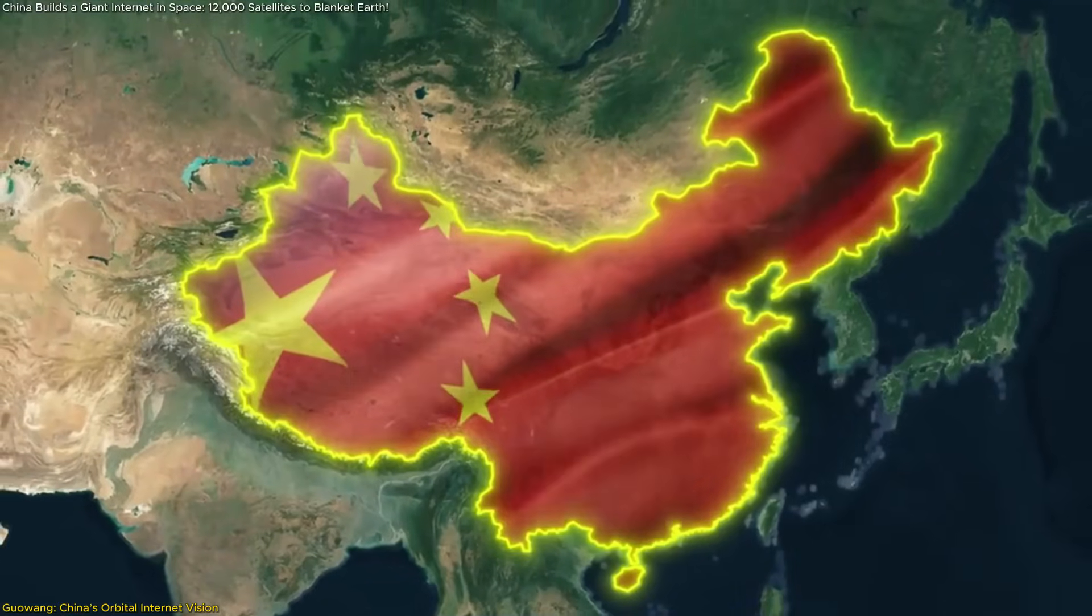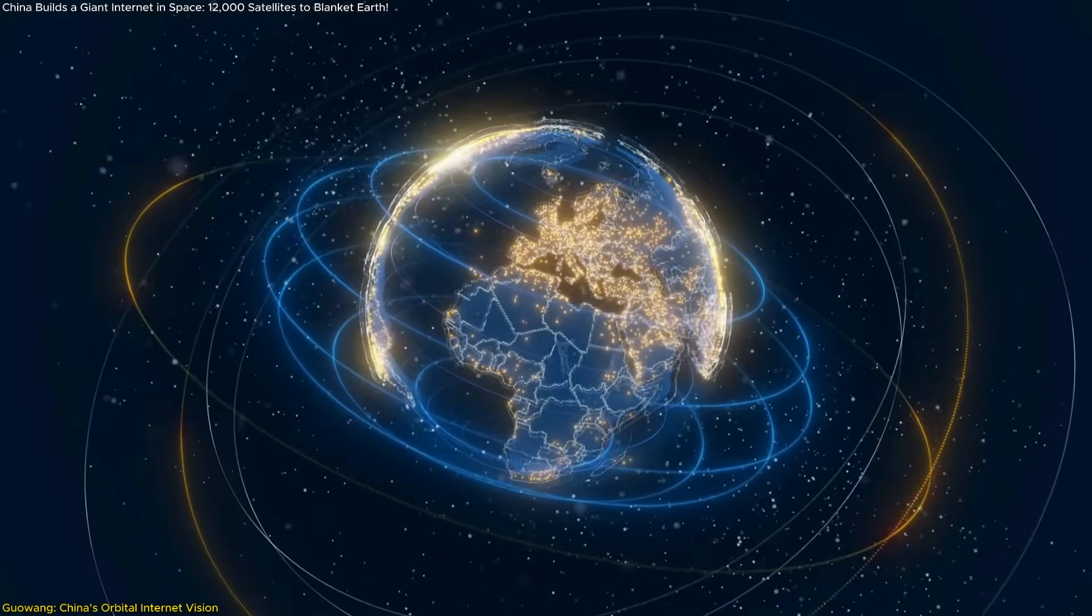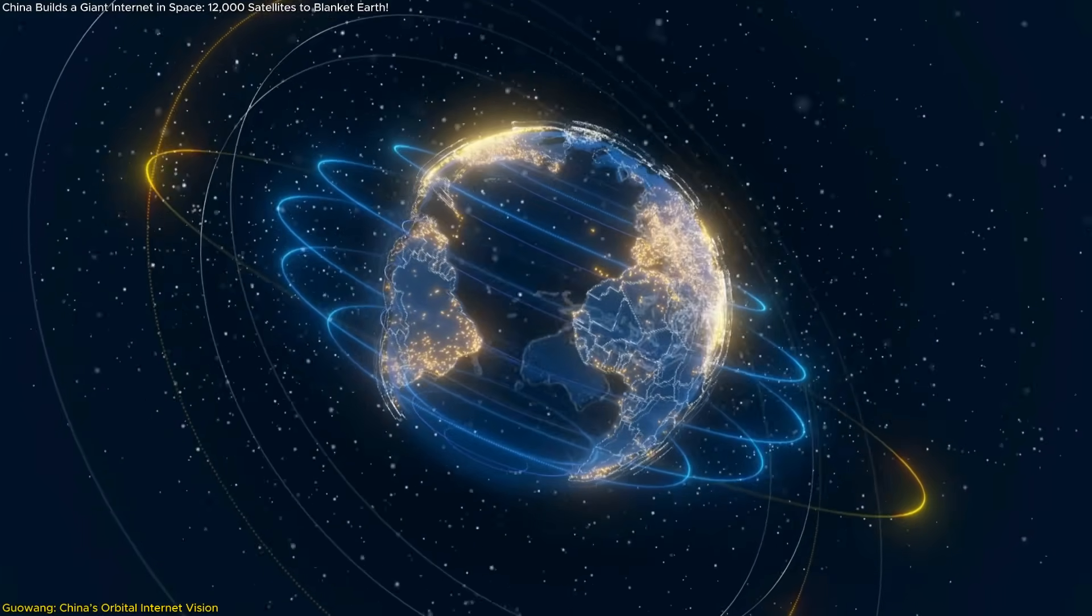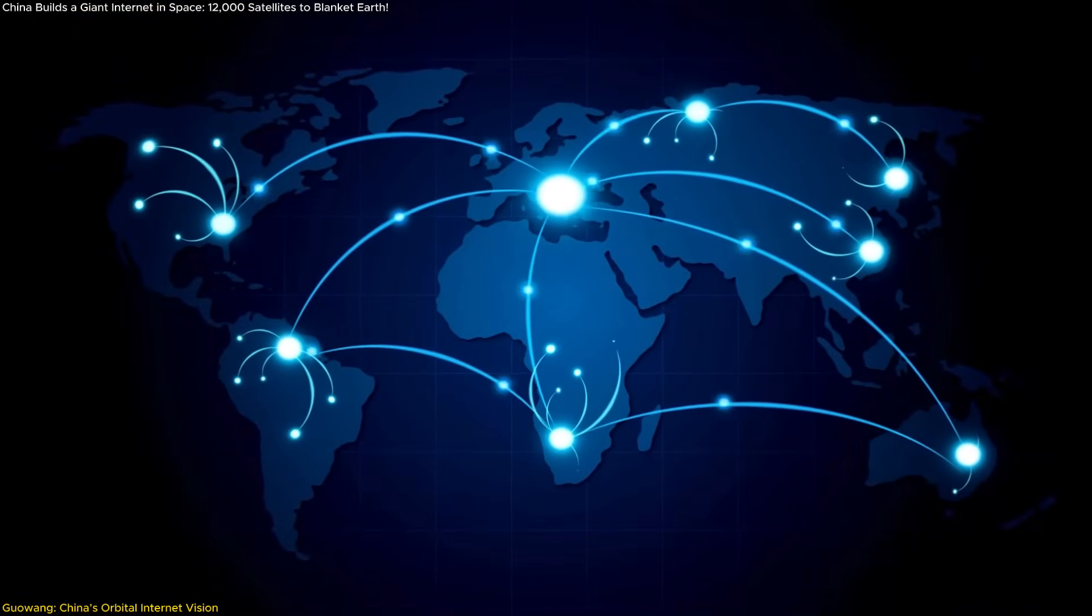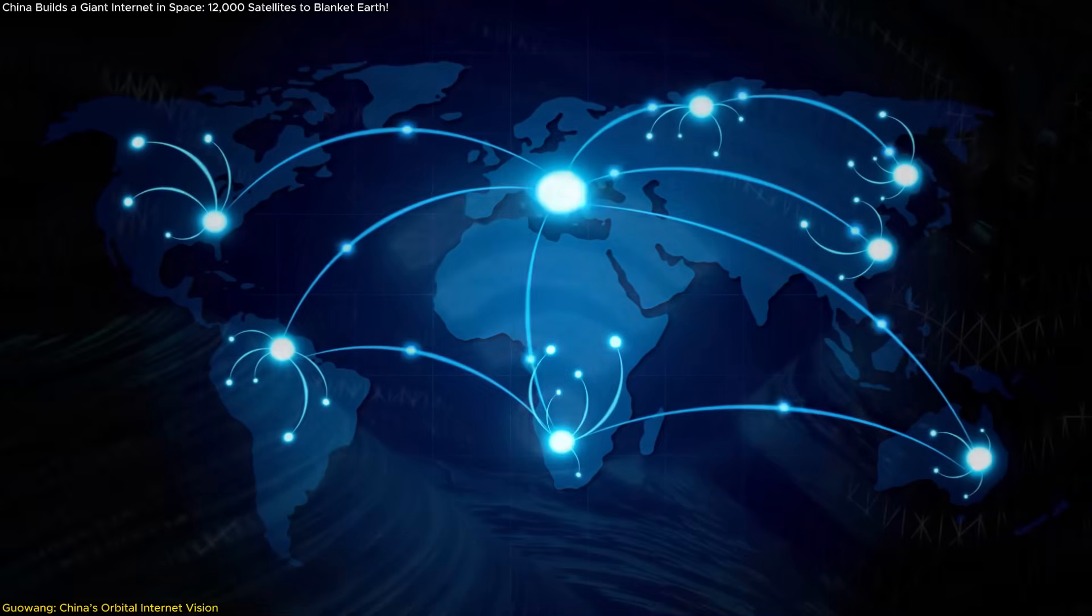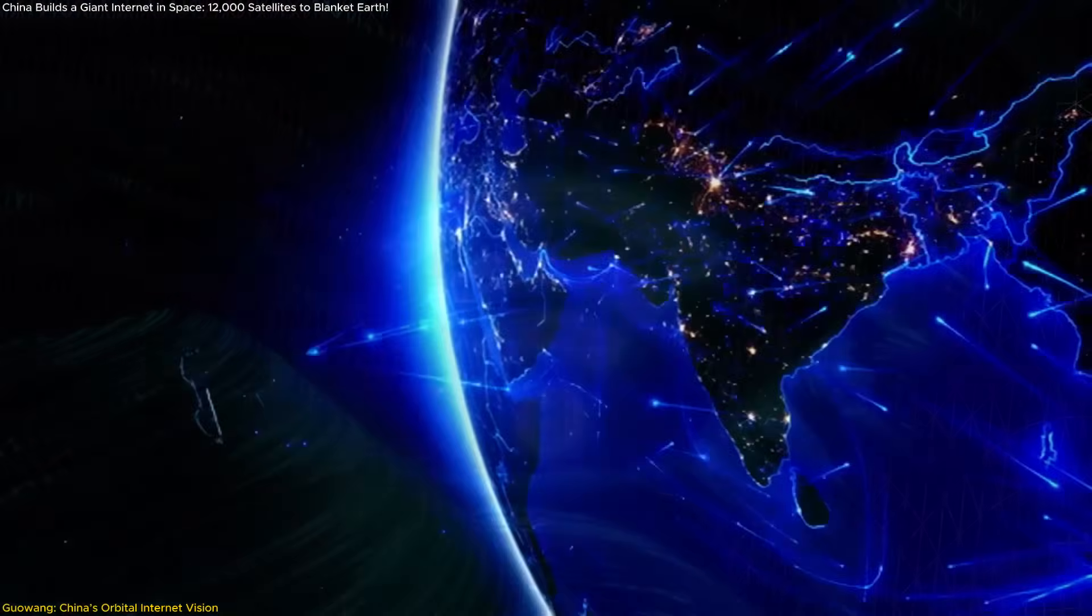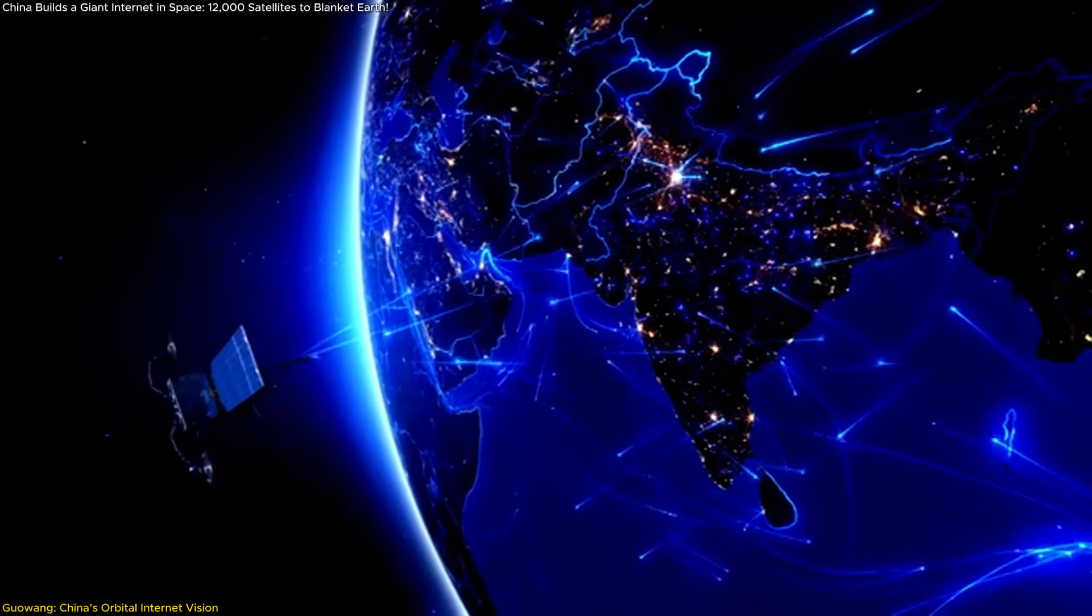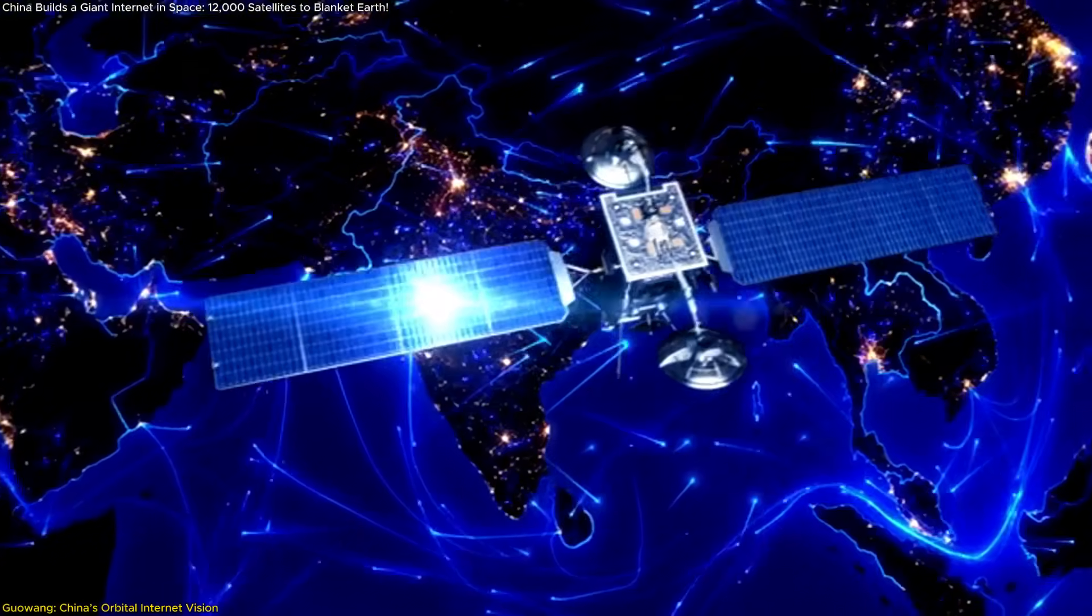But this isn't just about national pride or showcasing launch capabilities. Guang is meant to provide a sovereign, space-based internet infrastructure that connects regions with limited access while enhancing overall network resilience. This means providing stable, fast internet to rural areas, high-speed backup communication channels during infrastructure outages, and future expansion into regions outside China.